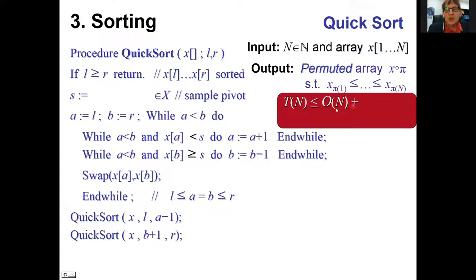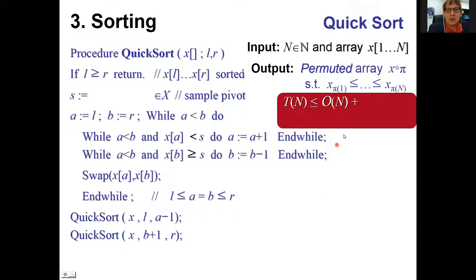The recurrence for sorting N elements has linear overhead; observe that unlike merge sort, there's no bookkeeping after the two recursive calls, since all elements in the first part are already smaller than those in the second part. But the bad case: if the pivot results in an imbalanced split, the first recursive call takes constant time and the second must sort all remaining elements. Solving that with the master theorem gives quadratic running time.